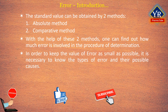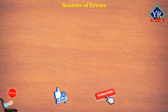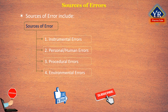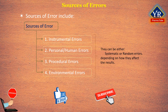In order to keep the value of error as small as possible, it is necessary to know the type of error and their possible causes. Common sources of error include instrumental, personal or human errors, procedural, and environmental errors. All of these errors can be either systematic or random depending on how they affect the results.